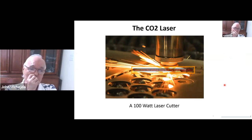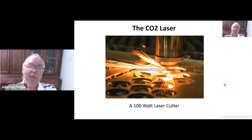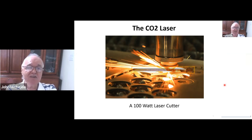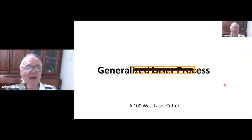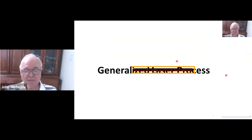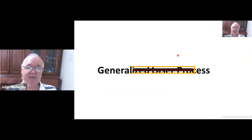Here is a CO2 laser — it's a 100-watt laser cutter that cuts a piece of steel approximately a quarter inch to a third of an inch thick. Now that we know how to make a CO2 laser, we can generalize the whole laser process to any other kind of laser.